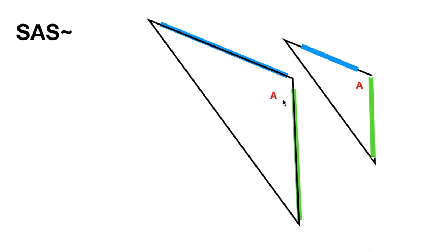Why does that work? Because this angle A stretches out this side proportionally to the other side, keeping that side-side-side similarity because angle A stretches it out the same amount as the other two sides.